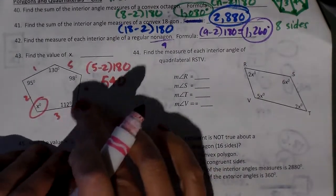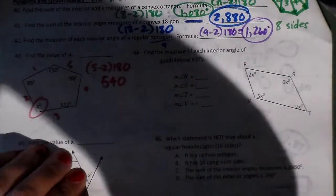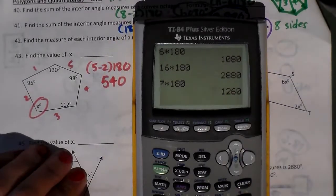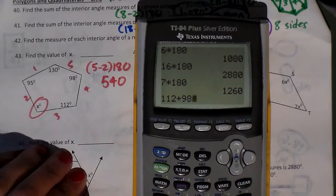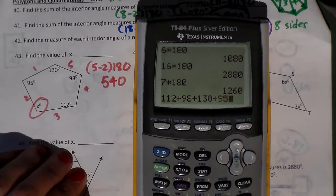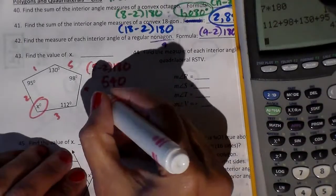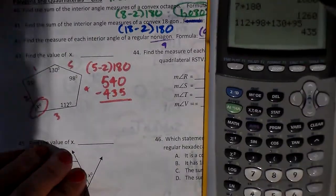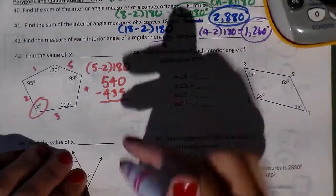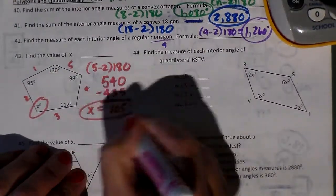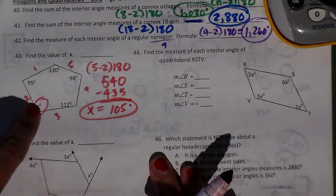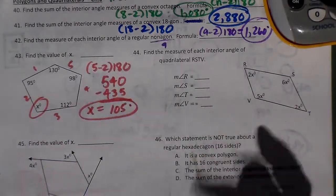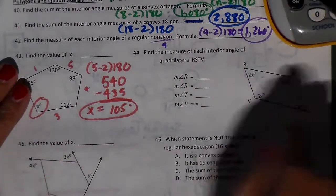I know that I have 112, 98, 130, and 95, and I'm missing that one angle. So I want to add the 112, 98, 130, and 95, and that gives me 435. So I'm going to subtract the 435 degrees from 540, and I end up getting 105. So x is 105 degrees. What I did was I found the total and I subtracted the ones I already had. Since it's a pentagon, 5 sides, 5 minus 2 times 180.